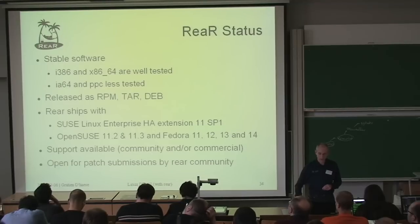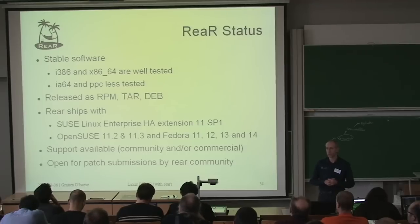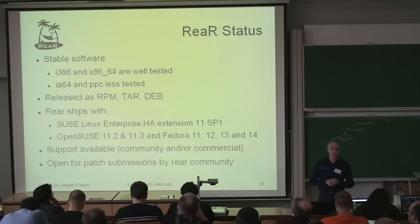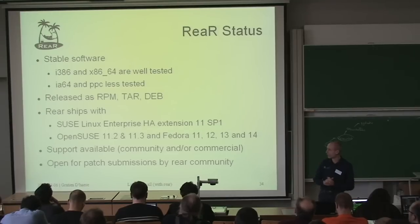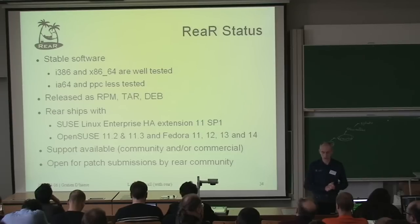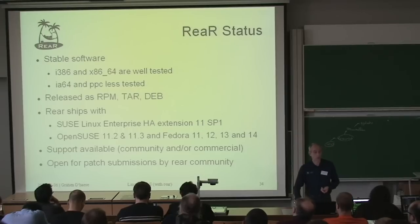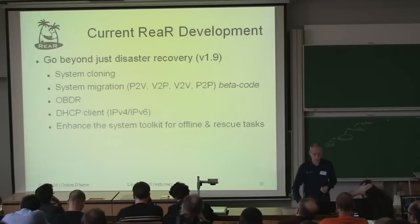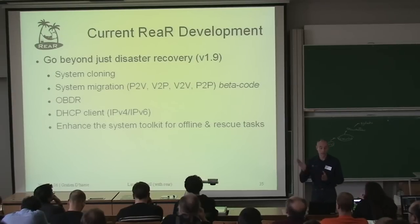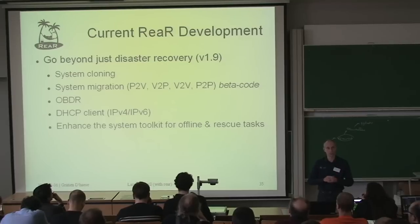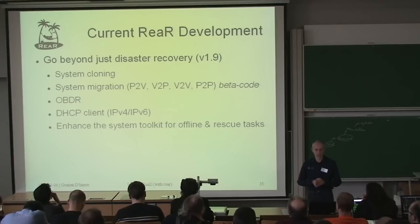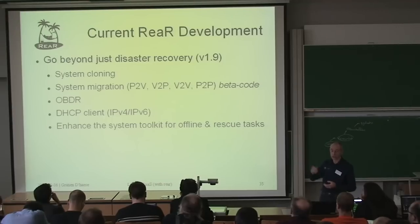The status: ReaR is very mature on Intel and x86-based architecture. It's also working on Itanium and PowerPC, but less tested. It is released as an RPM, tar, and deb, and ships with OpenSUSE and Fedora. Support is available via SourceForge, and we are open for patch submissions — the more the better. Release 1.9 has just been released, and it includes basic steps for cloning, still in beta. It is already usable for migration from physical to virtual or vice versa. The one-button disaster recovery method is available, and a DHCP client is available for service infrastructure.